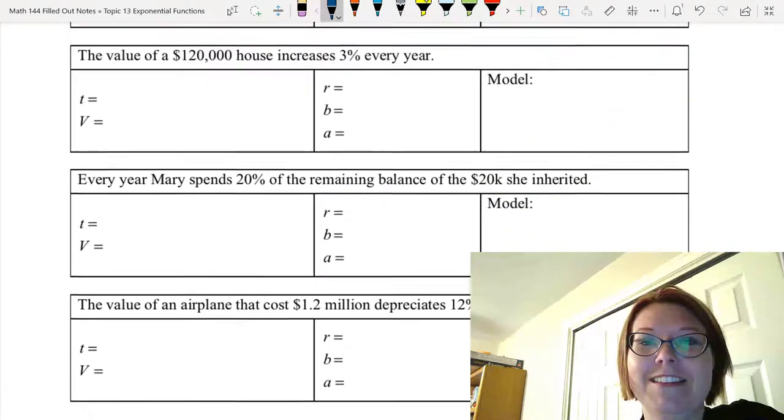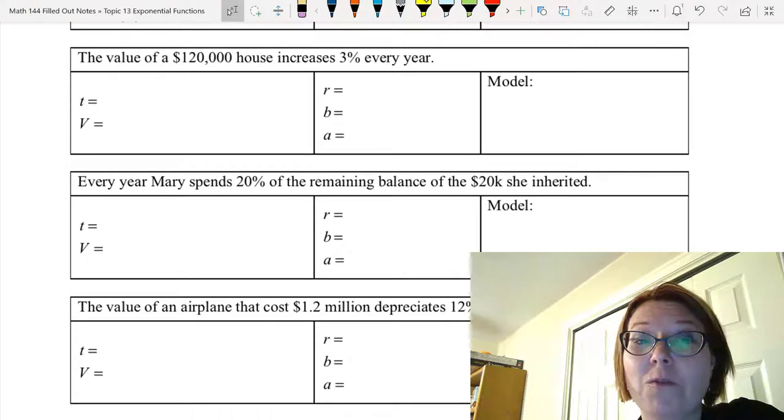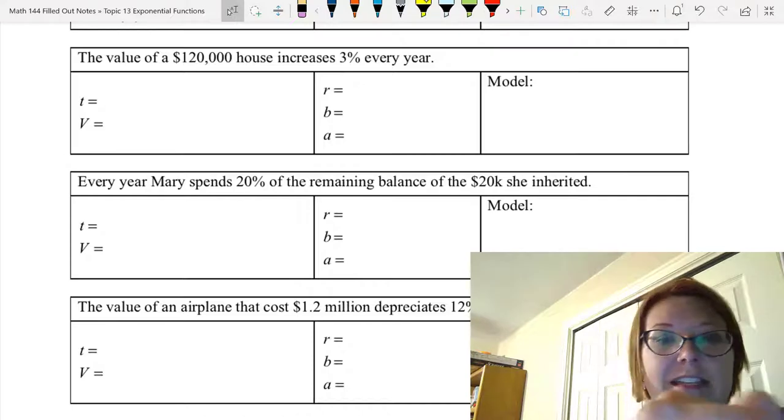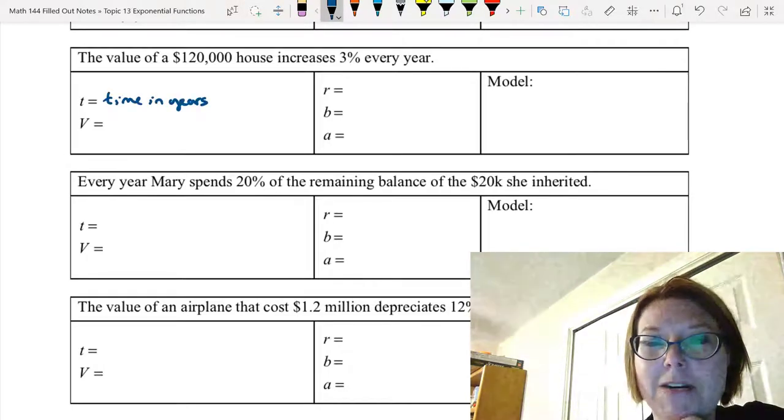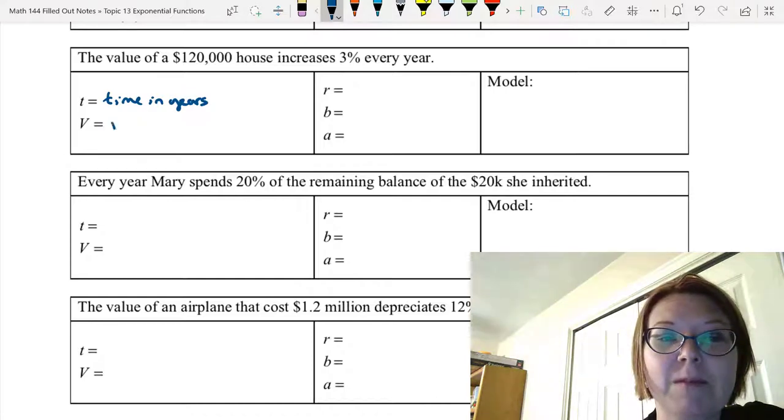Let's move on to the next one. The value of a $120,000 house increases 3% every year. So let's let T be the time in years. And again, to make our model a little easier, we could let V be the value of the house in thousands.